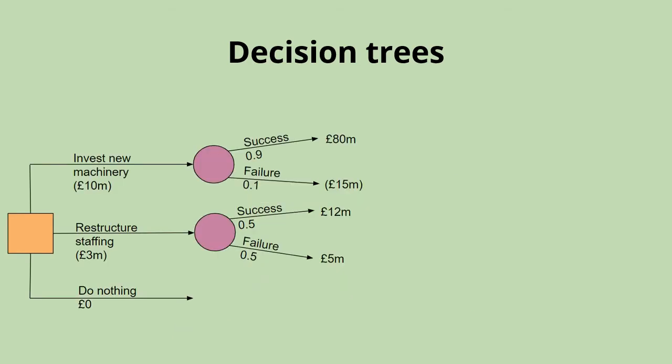Once we've drawn up the decision tree, we need to calculate the expected value for each of the different options. We do that by multiplying the probability by the return, and we make that calculation for every different possibility. Here we multiply 0.9 by 80 million to get 72 million pounds. We multiply 0.1 by the minus 15 million pounds to get negative 1.5 million pounds.